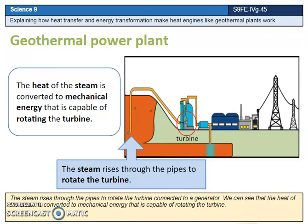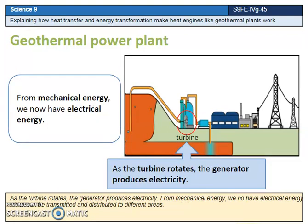We can see that the heat of the steam is converted to mechanical energy that is capable of rotating the turbine. As the turbine rotates, the generator produces electricity.